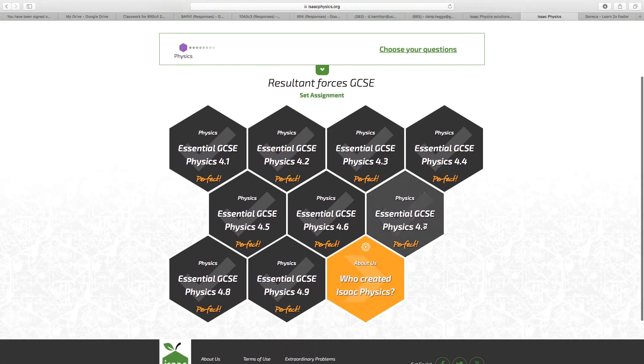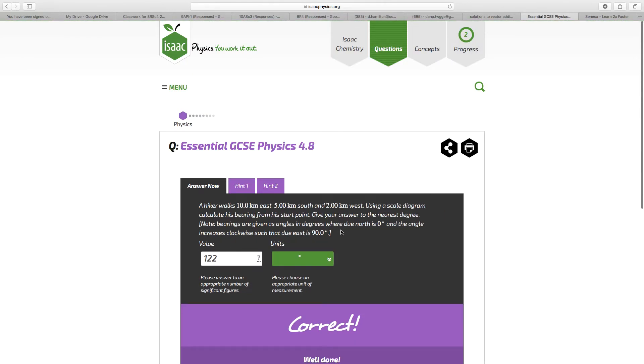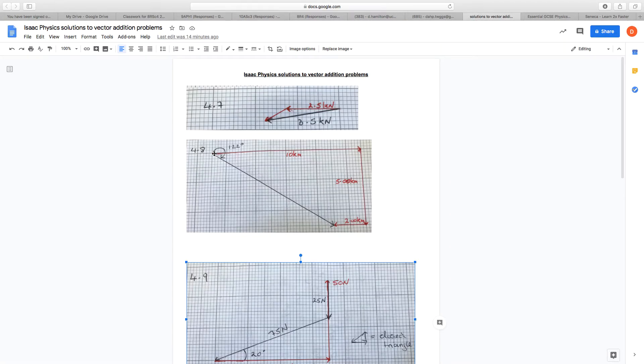So there's 4.7. 4.8 then. You have a 10 km east, followed by a 5 km south, and a 2 km west hike. And we want the bearing. And it tells you that bearings are measured with north being zero, and measuring clockwise. So let's have a look at 4.8 then. So there's our easterly walk, followed by our southerly walk, followed by our westerly walk.